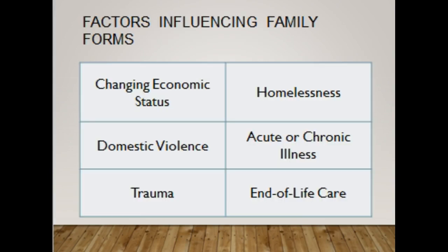Factors influencing family forms: social scientists identify six additional trends as threats or concerns facing the family. One, changing economic status — for example, declining family income, need for dual incomes, decreased health insurance, or lack of access to health care. Two, homelessness. Three, domestic violence. Four, the presence of acute or chronic illness. Five, trauma. Six, end-of-life care.